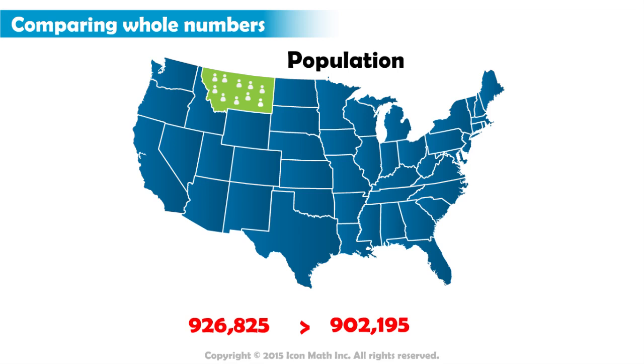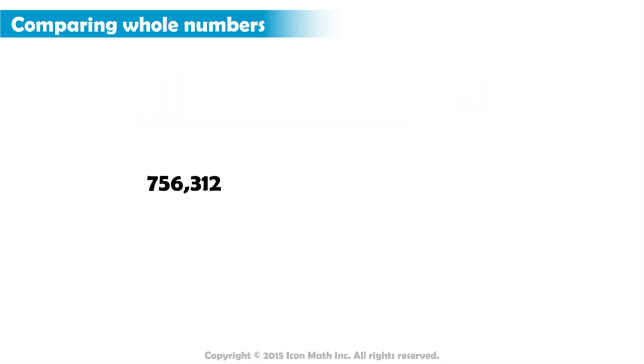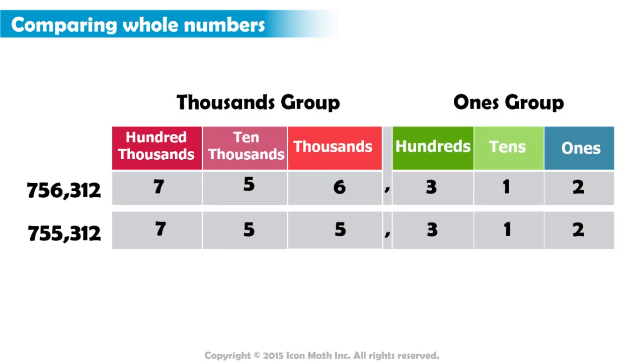Let's practice some more and compare the numbers 756,312 and 755,312. We insert the digits into the place value chart. We start by comparing the leftmost digits because they are in the highest place value, which is the hundred thousands place. In both, there is a 7.